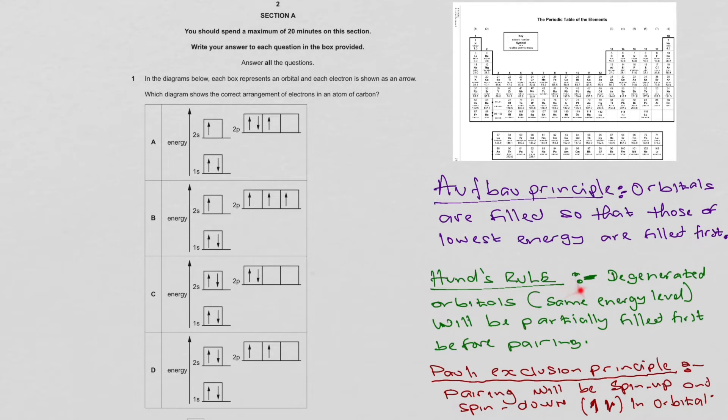That's what Hund's rule is saying. Pauli exclusion principle states that whenever we pair electrons in an orbital, one has to be spin up and the other has to be spin down. No two electrons can have the same four quantum numbers in an orbital.